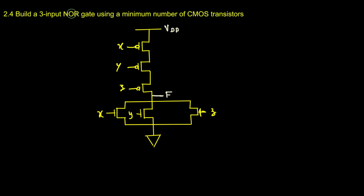But that's for the OR gate. This is a NOR gate — it is exactly opposite. If you have a single 1 that makes the whole output 0. So it's exactly the opposite of an OR gate. Let's now analyze that using the truth table.